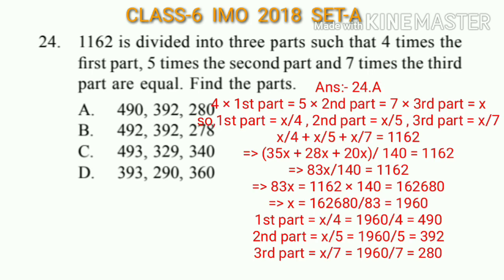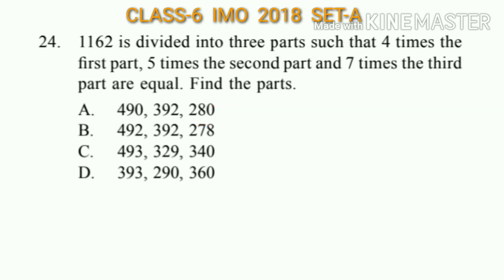Since 1162 is divided into three such parts: x/4 + x/5 + x/7 = 1162. We find the LCM of 4, 5, and 7, which is 140. Adding these gives 83x/140 = 1162, so x = 1960. The first part is 1960/4 = 490, the second part is 392, and the third part is 280. So the answer will be option A.